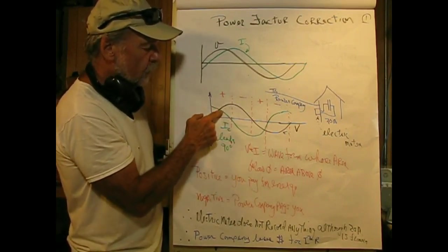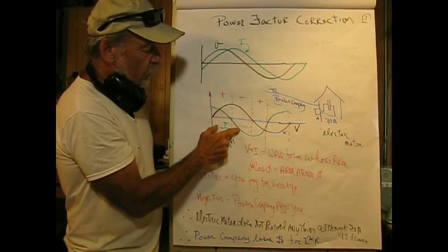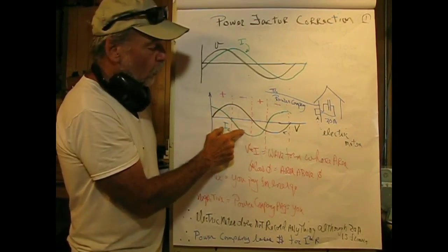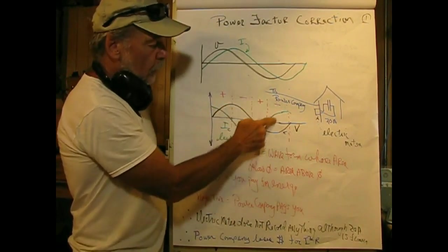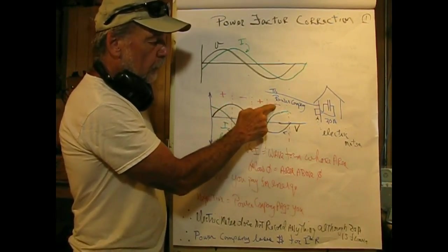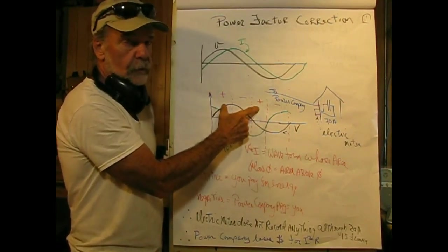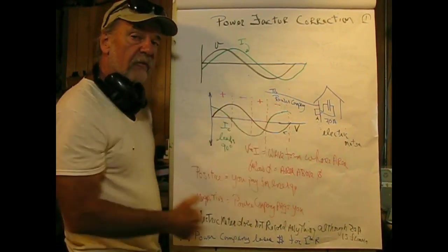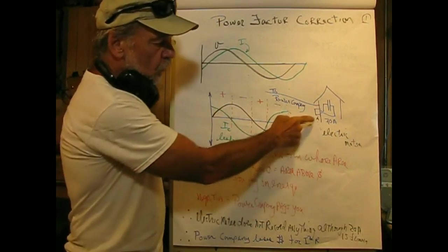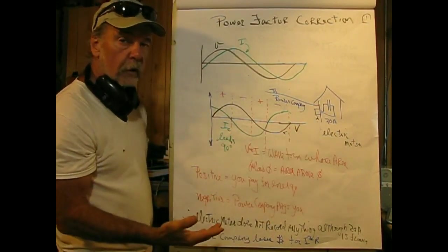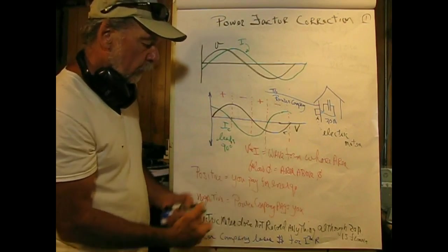If we go through the voltage waveform in black and the current waveform in green and multiply each point together, when both are positive we get a positive number, when signs differ we get negative. The positive means we're using energy, and the negative means we're giving energy back to the electric company. So our electric meter doesn't move at all, even though we have 20 amps of current flowing.